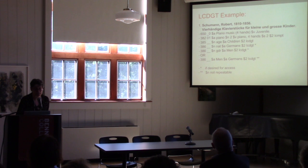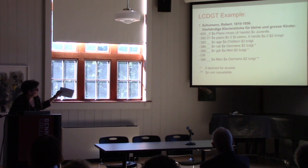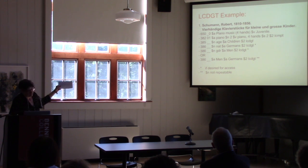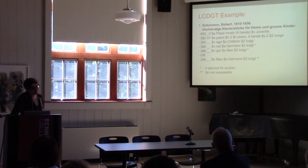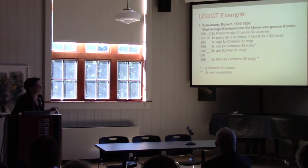Here's an example: a piano piece for little and big children. You can see it's got piano music. Two of them would be the 650. The 382 — we all know about that — is for the medium of performance. The 385 is the audience. You can see the subfield N for age — that's the code — and the term itself is 'children.' The source code goes in subfield 2. The 386 is the creator code. You might not always want to bring this out — most of this is being done for when those terms were in the subject heading and you want to parse it out.